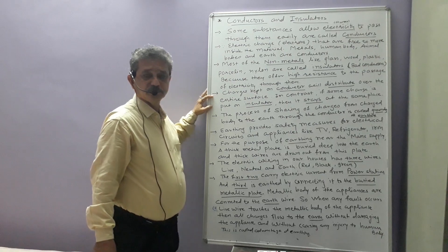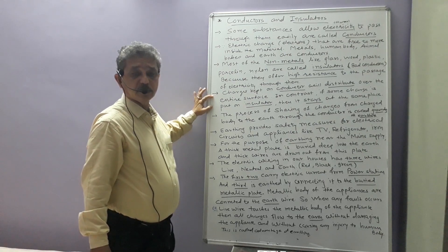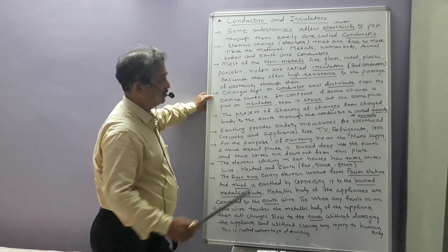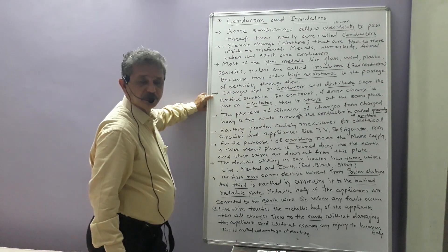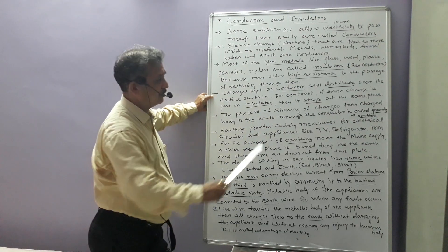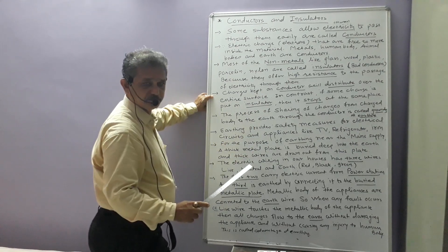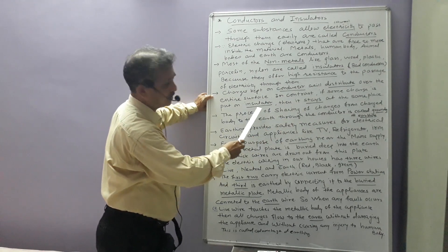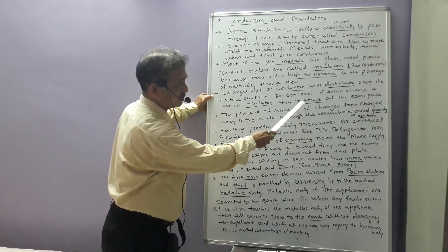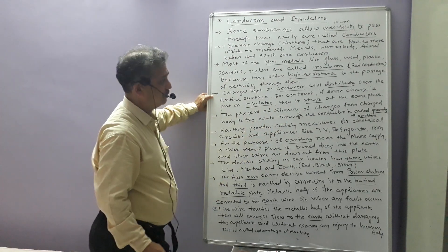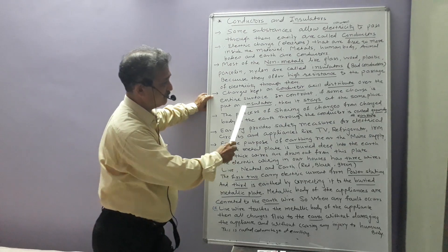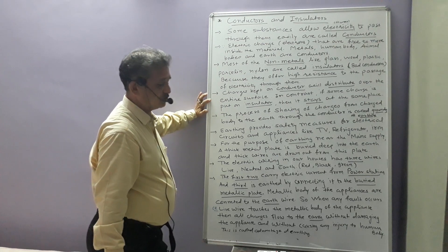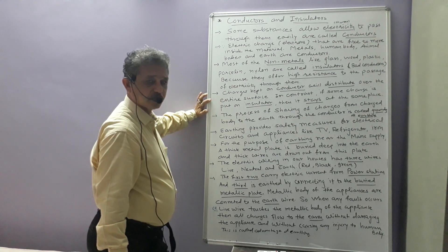Here is a main point. If you put certain charges on a conductor, those charges will distribute immediately over the entire surface of the conductor. But in contrast, if charges are placed on an insulator, they stay only at the same place and do not distribute over the entire surface. This is the main difference between conductors and insulators when charges are placed on them.